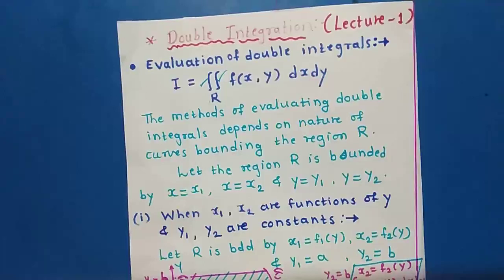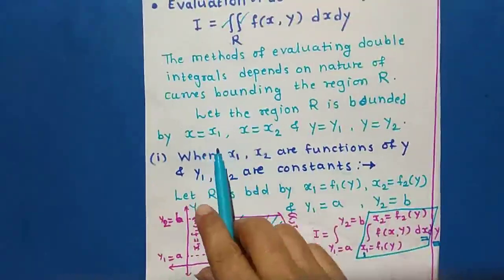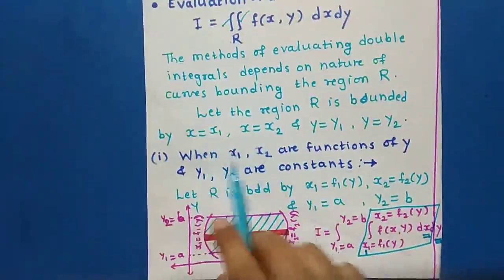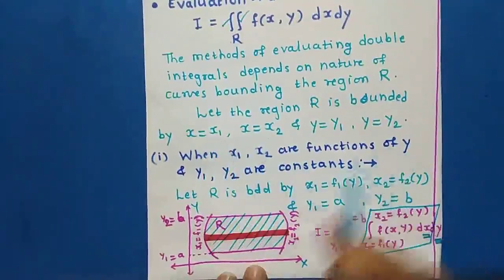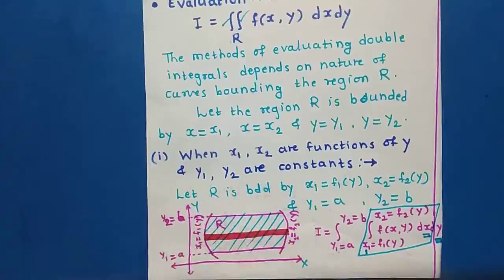First I explain Case 1, in which the limits of x are functions of y. Here x1 and x2 are functions of y, and y1 and y2 are constants — meaning the limits of y are constant. Remember: if the limits of x are functions of y, then we take a strip parallel to the x-axis, that is, a horizontal strip.